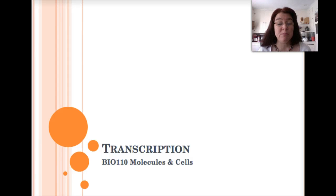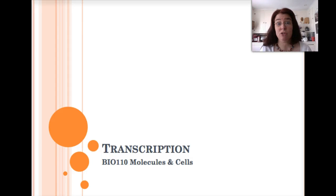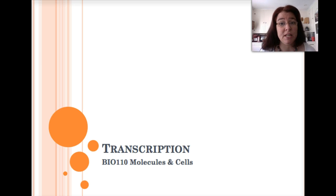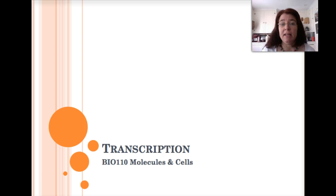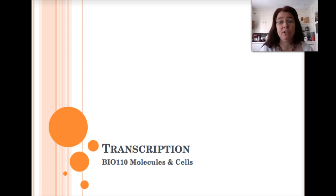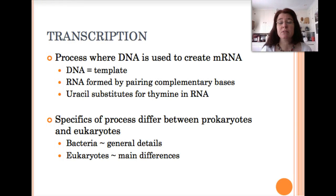Today we're going to be talking about the process of transcription. First, we want to review the central dogma, which states that DNA is transcribed into RNA, RNA is translated into protein, and it's protein that creates traits or characteristics in organisms.